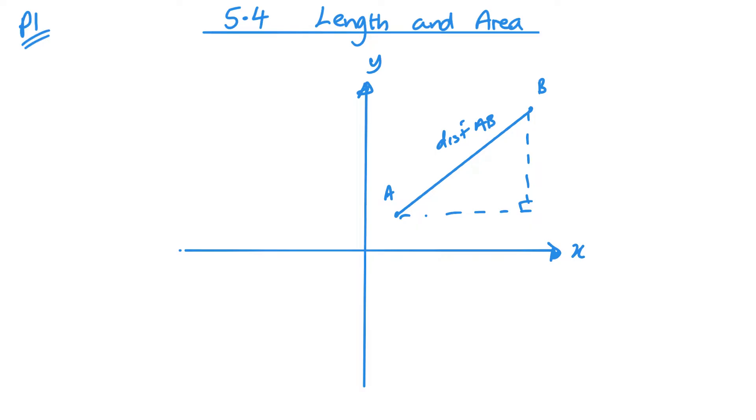Now A is going to be the coordinates x1, y1 and B is going to be the coordinates x2, y2. Then what that means is that for the height of this triangle or this vertical distance we are looking at y2 minus y1. So the difference in the y coordinates and that horizontal distance is going to be very similar, x2 minus x1.